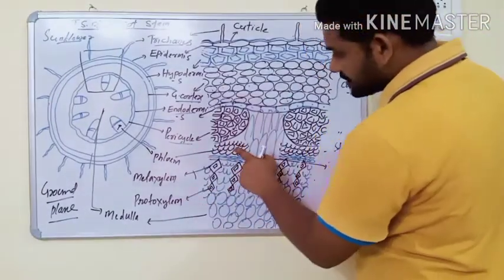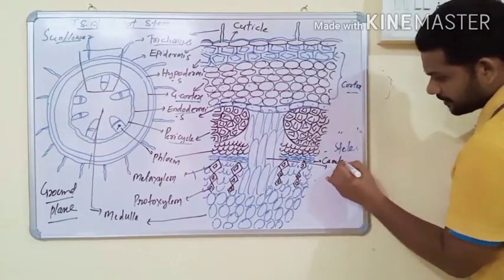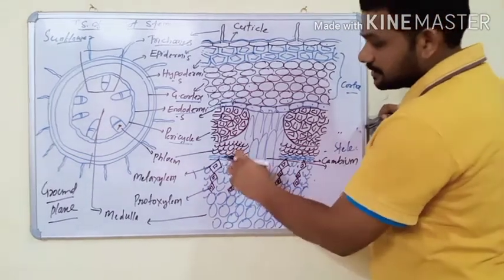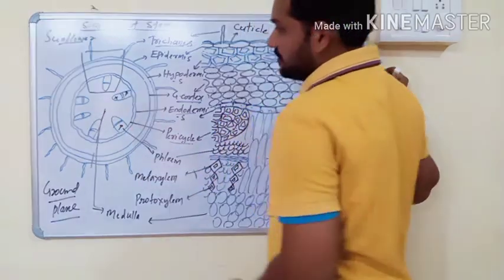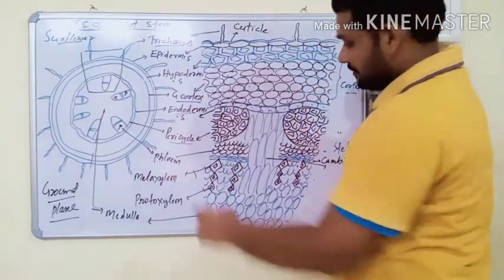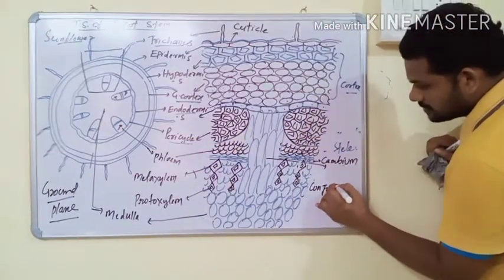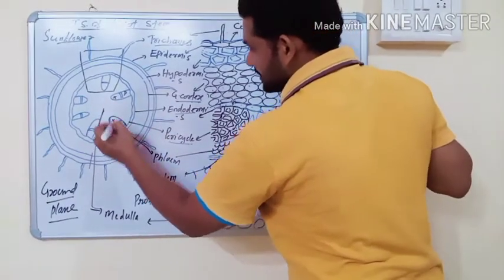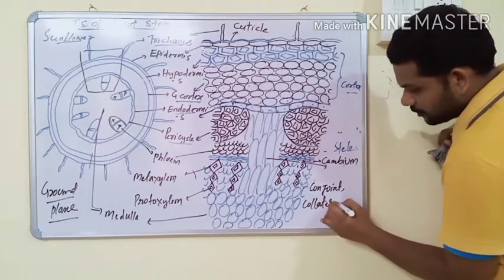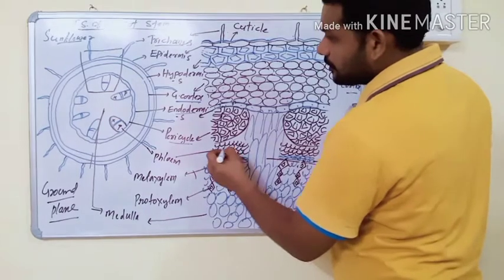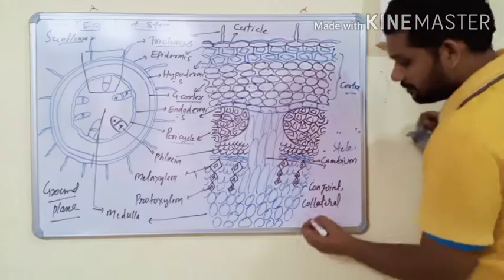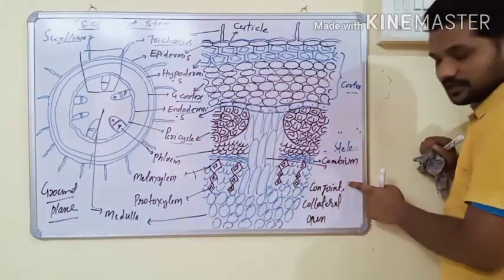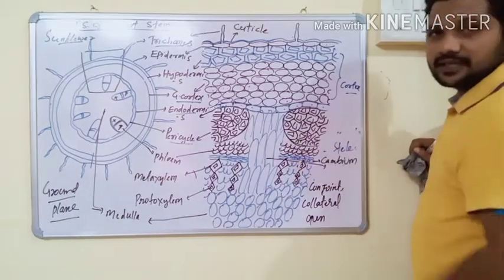Next are the vascular bundles, which consist of phloem, cambium, and xylem. Cambium is a fully meristematic tissue present between phloem and xylem. If xylem and phloem are present together, the vascular bundles are called conjoint. If both are on the same radius, it is collateral. If cambium is present, it is open type. So in dicot stem, the vascular bundles are conjoint, collateral, and open type — this is very important.